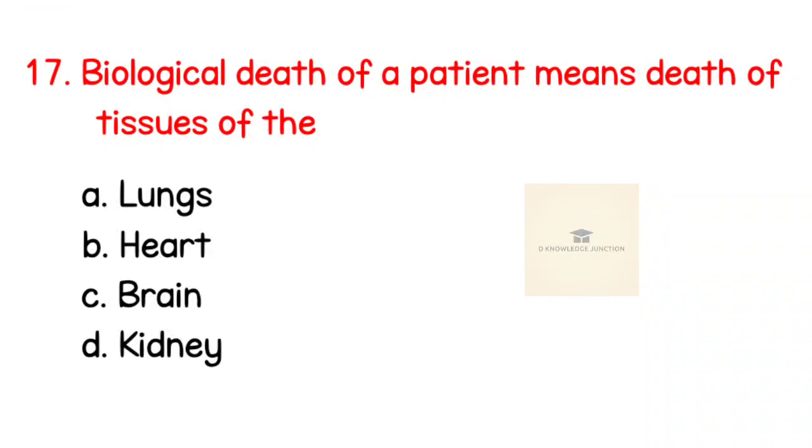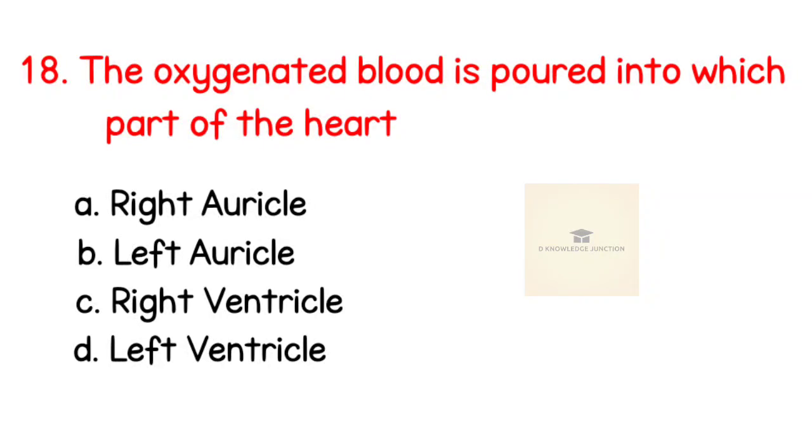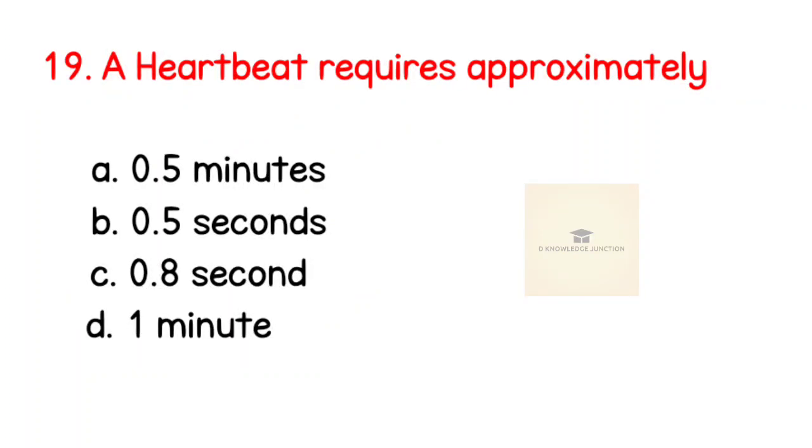Biological death of a patient means death of tissues of the? Right answer is brain. Question number 18: The oxygenated blood is poured into which part of the heart? Right answer is left auricle.